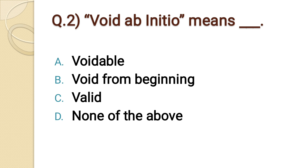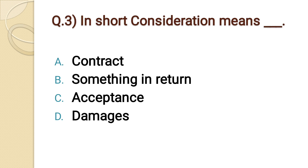Question number two: Void ab initio means dash dash. Option A: voidable. Option B: void from beginning. Option C: valid. Option D: none of the above. The correct option is option B: void from beginning.